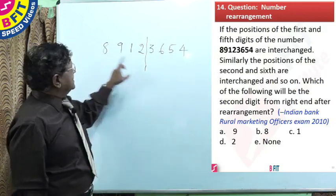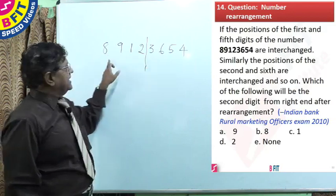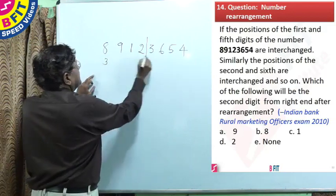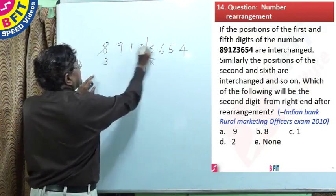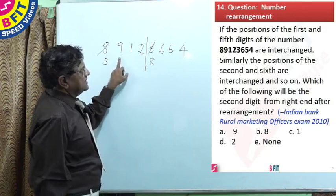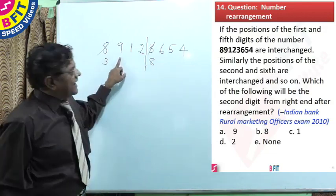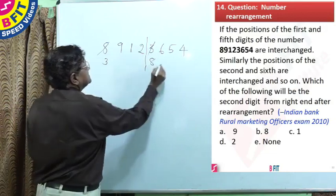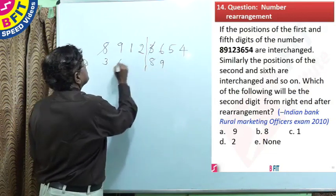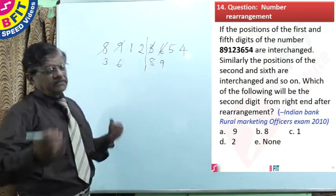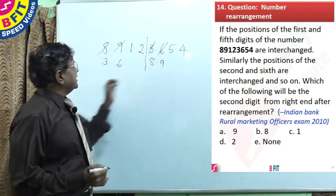The first and fifth digits are rearranged. Let us do it in single step. So, we have 3 and 8 interchanged. And then, similarly, the position of second and sixth, this is 9 and this is 6, are interchanged and so on. In the same pattern, we should continue.